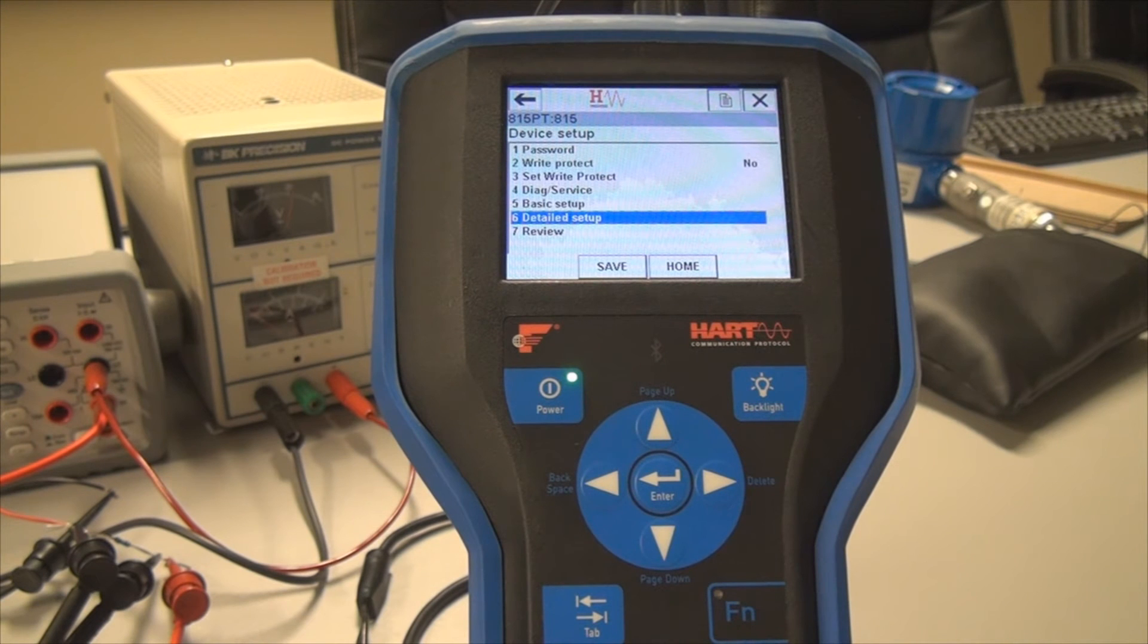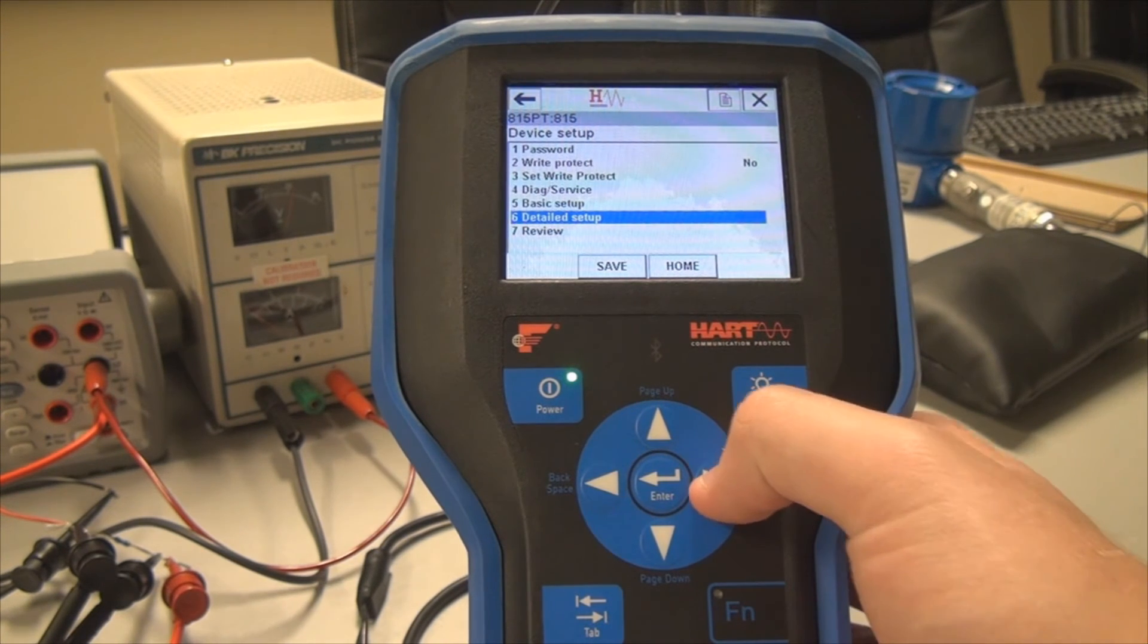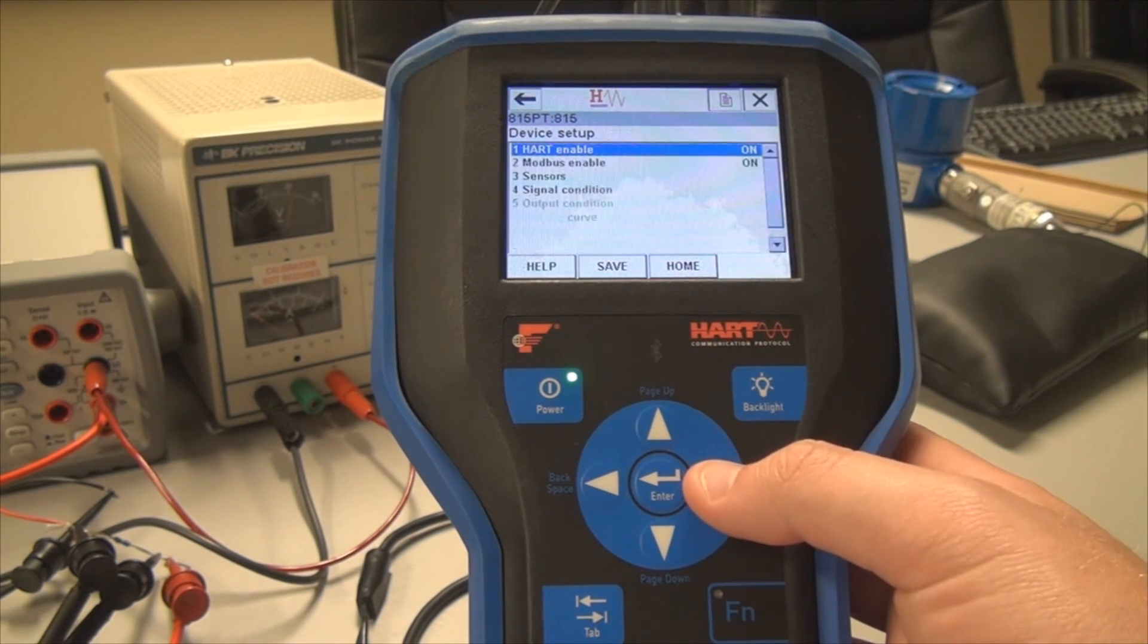So one of the other things that the 815PT and 815DT offer is the numerous amount of options for switching features. And those can all be calibrated and those options can be set with a HART communicator.